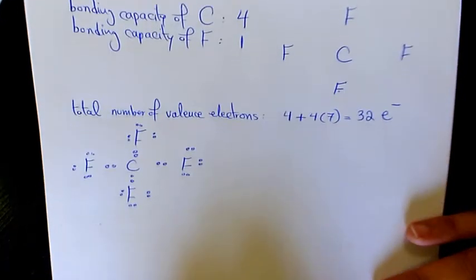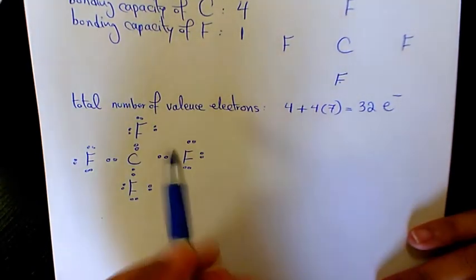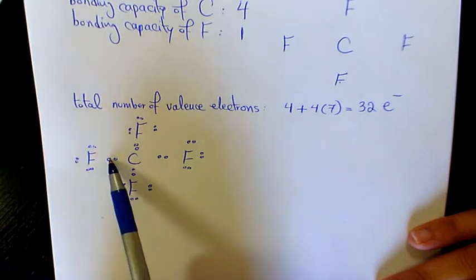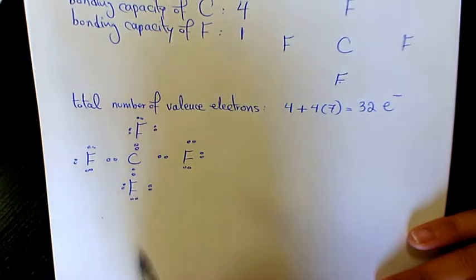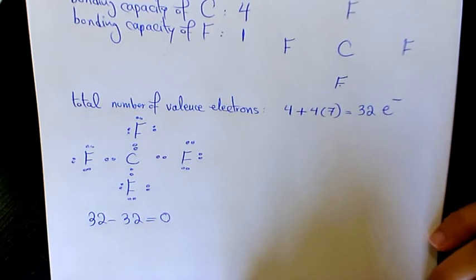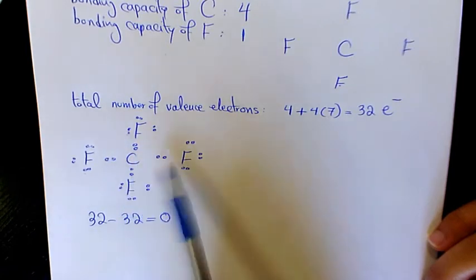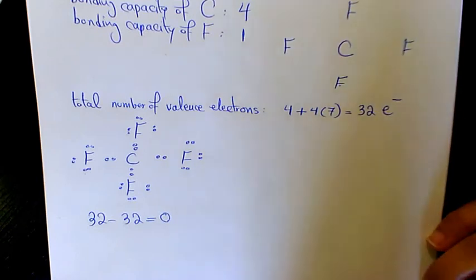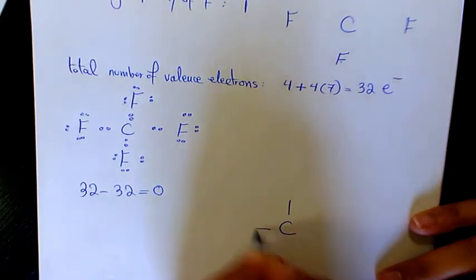Now we find out how many electrons are still available by subtracting the total number of electrons used from the total number of valence electrons. In total we have 32 electrons, and we used 16 pairs — 16 times two equals 32 — so 32 minus 32 is zero. We have no remaining electrons. Checking the octet rule: carbon has eight electrons and all fluorines have eight as well, so the structure is complete. We just replace shared electrons with dashes to show bonds.